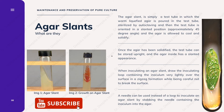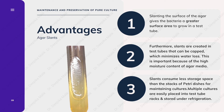When inoculating an agar slant, we take a sterilized inoculating loop dipped into the inoculum containing the cells we want to preserve and move it lightly over the surface of the agar slant in a zigzag formation, being careful not to break the surface. Sometimes a needle can be used instead of an inoculating loop by stabbing the needle containing the inoculum into the agar. After inoculation, we incubate the agar slant at the appropriate temperature, and after a specific time we see the growth on the agar slant.